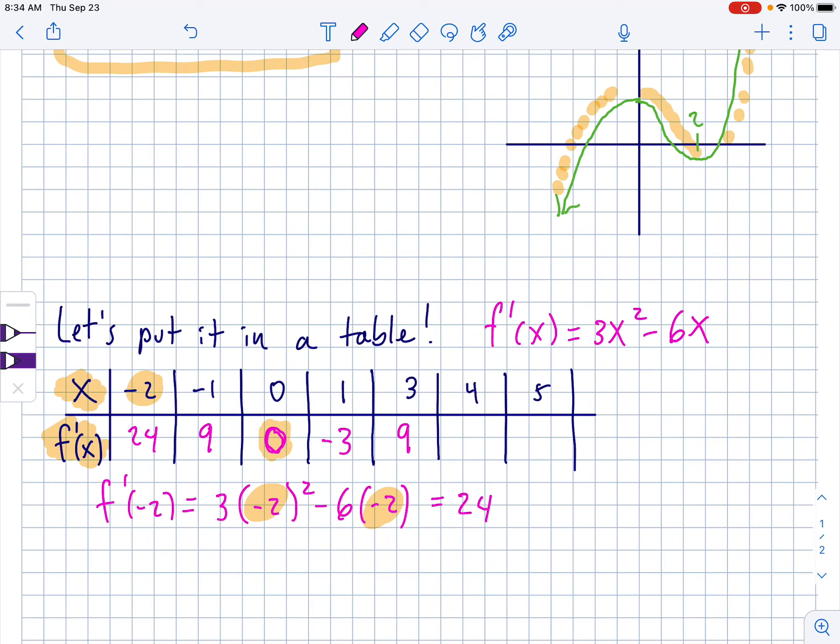And then put a 4 in there, you get 16 times 3. I should really grab a calculator. It's a little early in the morning for that. 3 times 16 minus 24. So this is 24 as well. Hey, look at that. It's the same slope here as here. Interesting. And then the 5, 3 times 25 minus 30, 45.